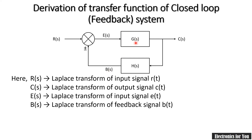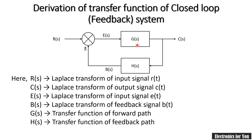Two new things are here: G(S) and H(S). Generally in a block diagram we write the transfer function inside the block. G(S) is the transfer function on the forward path, so we call it the transfer function of the forward path. H(S) is the transfer function of the feedback path.